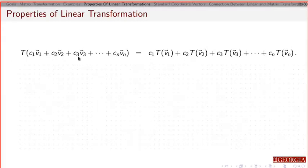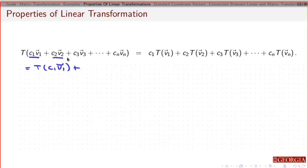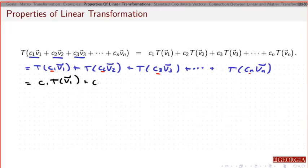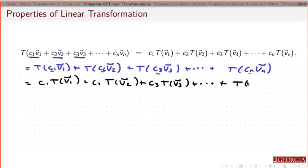Another nice thing we get is this. Why is that? This is basically taking our operation and doing it twice. Because it's a linear transformation, I can take each of these — that's a vector, that's a vector, that's a vector — so I can break this out. And again, because it's a linear combination, this is a scalar number, so I can pull those out using the second property of a linear transformation.